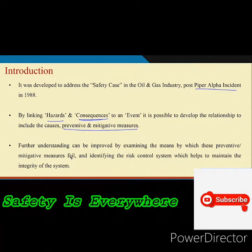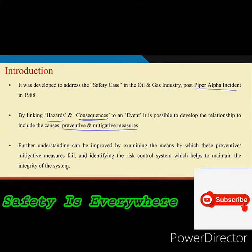Further understanding can be improved by examining the means by which the preventive and mitigating measures fail. You have preventive and mitigating measures, but they can fail — how will they fail? That means identifying the risk control system which helps to maintain the integrity of the system. By integrity we mean mechanical integrity and operational integrity. This is essentially the use of bow tie.